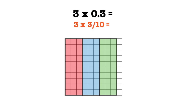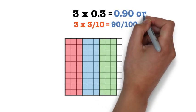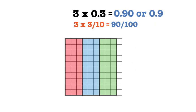Now that we have our three groups of three-tenths, we need to look at how many total squares we shaded. Since we used a 10 by 10 grid, we had a total of 100 squares. After shading in three groups of three-tenths, we have 90 of those 100 squares shaded. This means that our answer is 90 over 100, or 90 hundredths, which we can also write as nine-tenths.